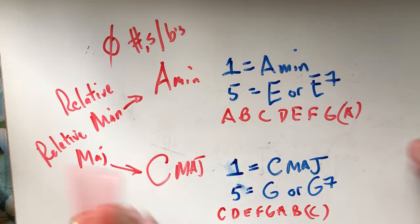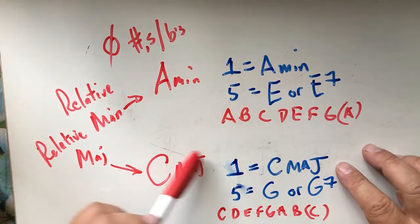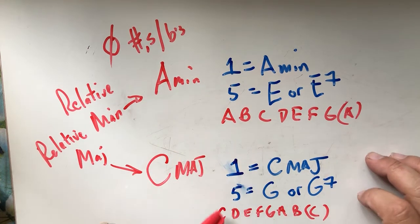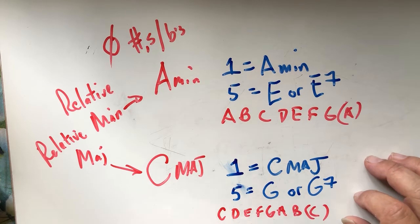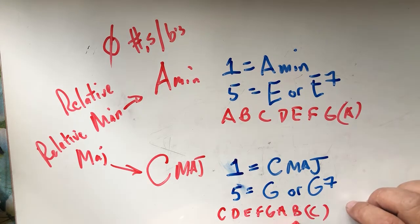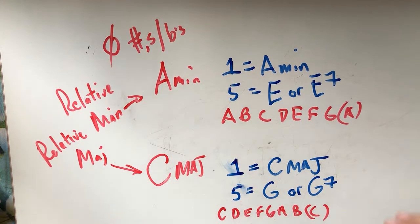And if I'm in C major, then my I chord is C and my V is G major or G dominant 7 as well, because that B from the G chord is going to push us back.